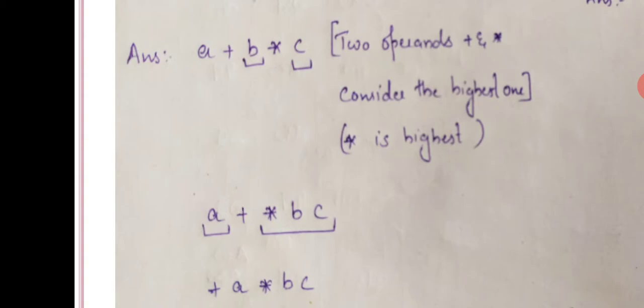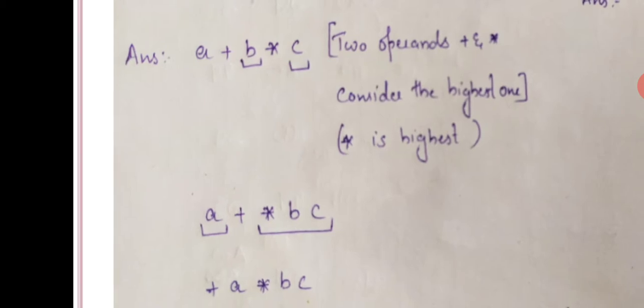The operator is placed between two operands in infix. In prefix conversion, we place the operator before both operands. So plus a star b c is the prefix form. We will convert infix to prefix.